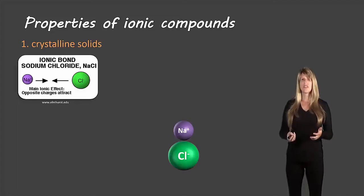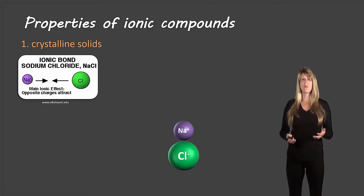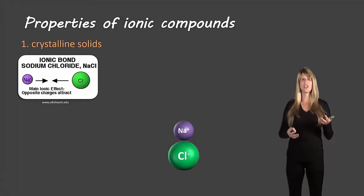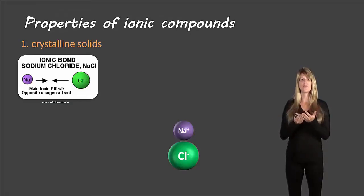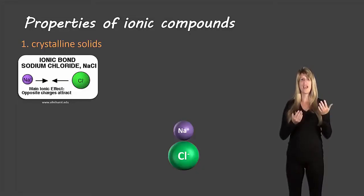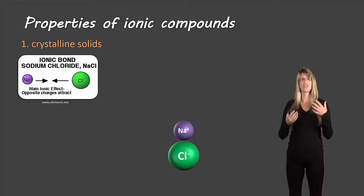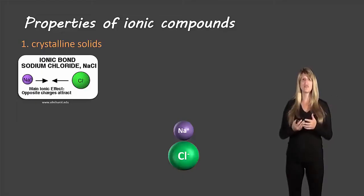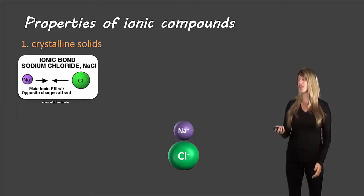The first property is that ionic compounds form crystalline solids, or crystals. Ionic compounds are formed by cations, which are positively charged, and anions, which are negatively charged, attracting towards each other. Just because a cation and an anion have formed a bond doesn't mean that cation or anion is no longer positively or negatively charged — they still have that charge.